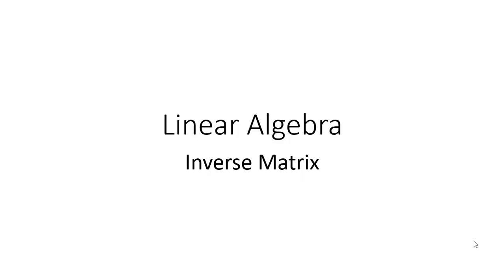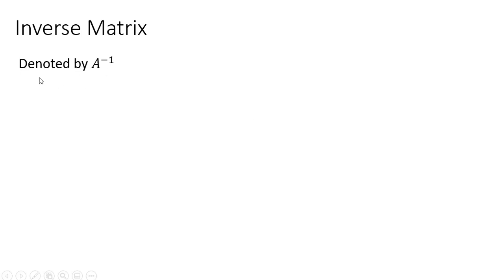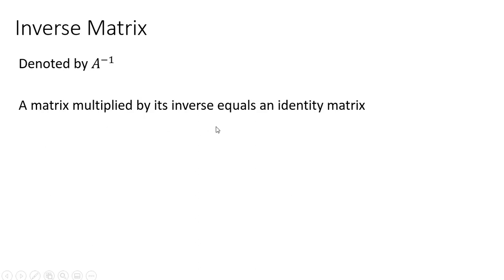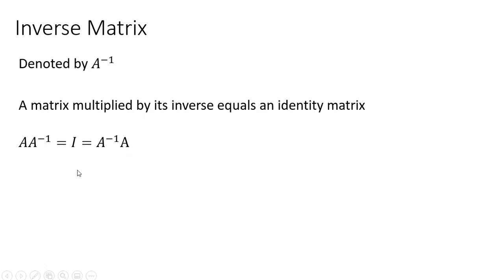In this video, we're going to solve for the inverse matrix. The inverse matrix is denoted by the following: a matrix multiplied by its inverse equals an identity matrix. An identity matrix is a matrix in which you have 1s along the principal diagonal and 0s everywhere else. Matrix A multiplied by its inverse equals the identity matrix, or the inverse multiplied by matrix A will also equal the identity matrix.